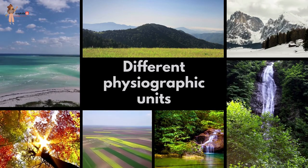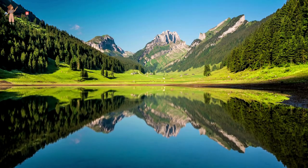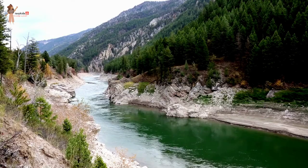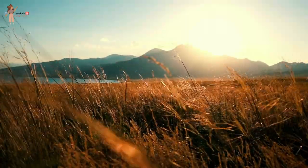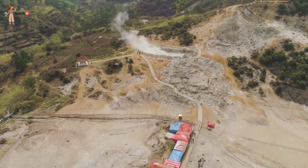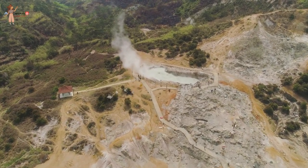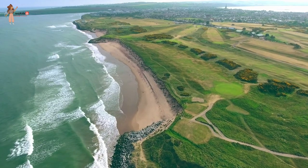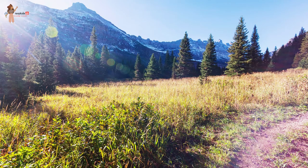A detailed account of the different physiographic units highlights the unique features of each region, but it is clear that each region complements the others, making the country richer in its natural resources. The mountains are the major sources of water and forest wealth. The northern plains are the granaries of the country and provided the base for early civilizations. The plateau is a storehouse of minerals which has played a crucial role in the industrialization of the country. The coastal regions and island groups provide sites for fishing and port activities. Thus, the diverse physical features of the land have immense future possibilities of development.